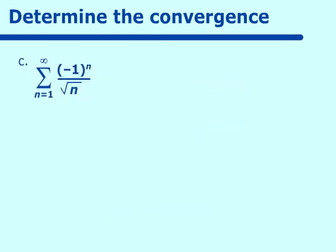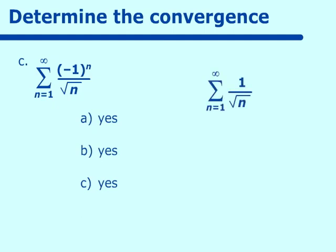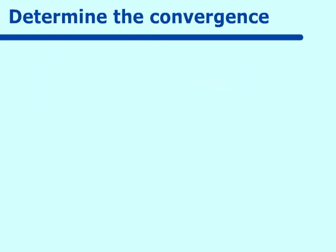How about (-1)ⁿ over the square root of n? (A) Terms positive — yes. (B) Decreasing — yes. (C) Limit is 0 — yes. But does 1 over the square root of n converge? No, it does not. So because the non-alternating series does not converge, the alternating series converges conditionally.